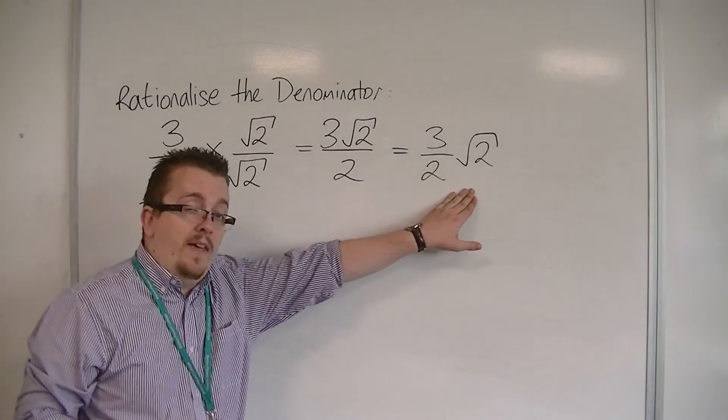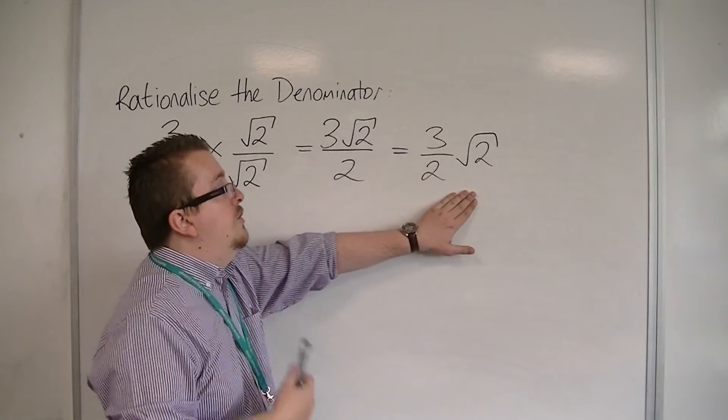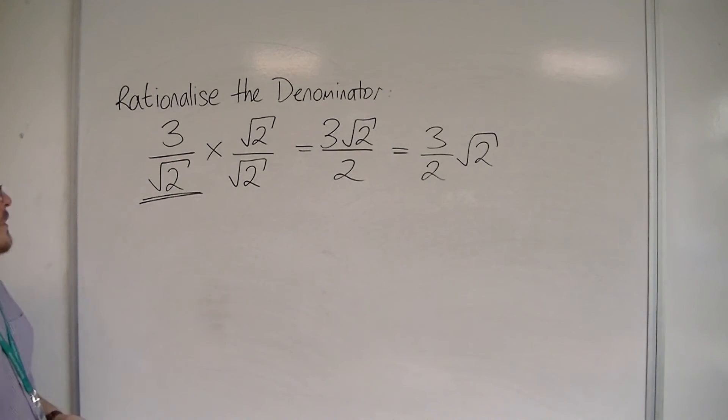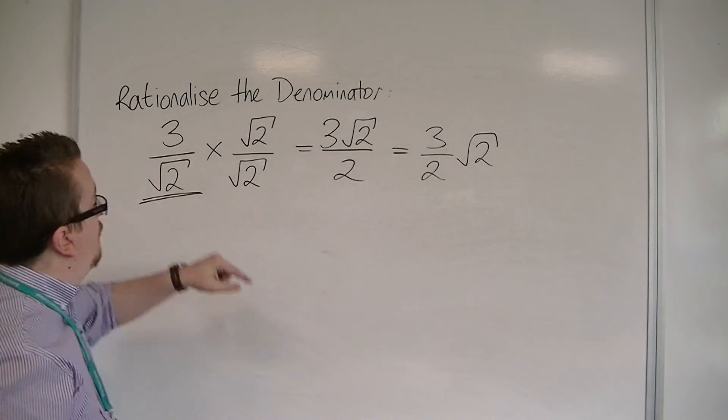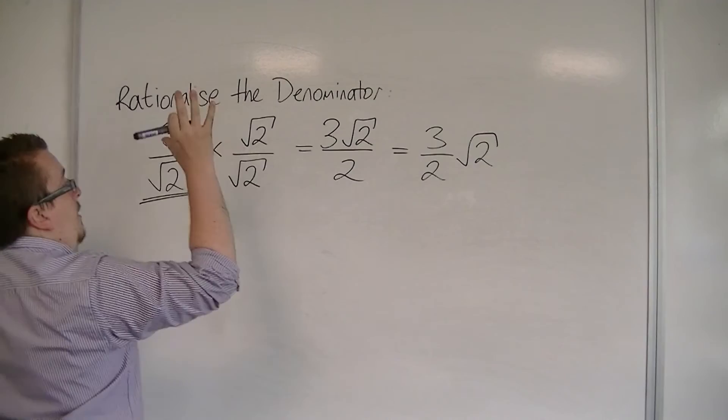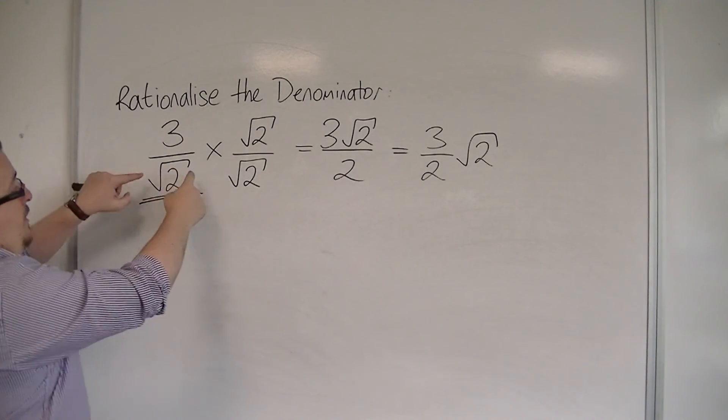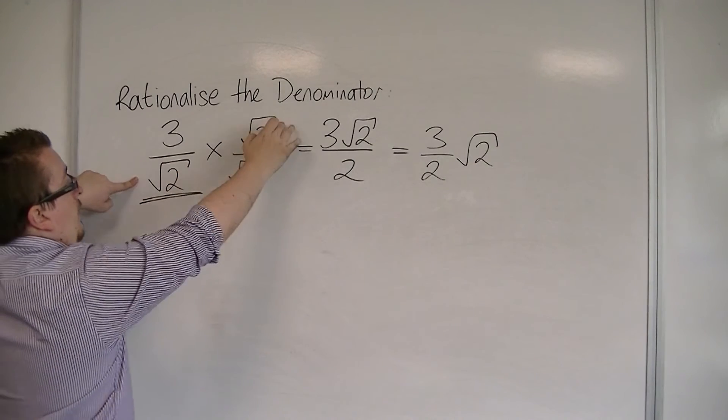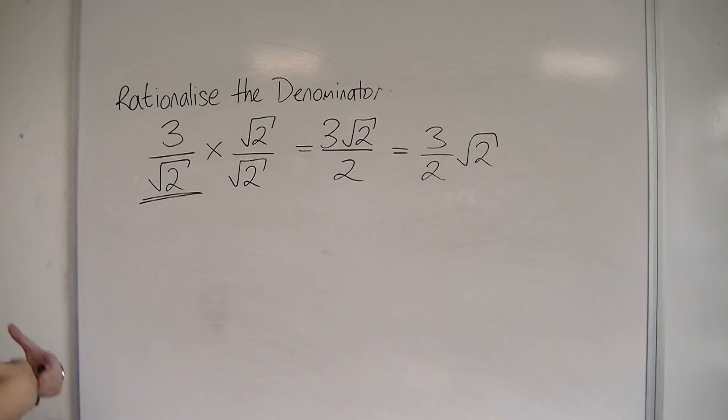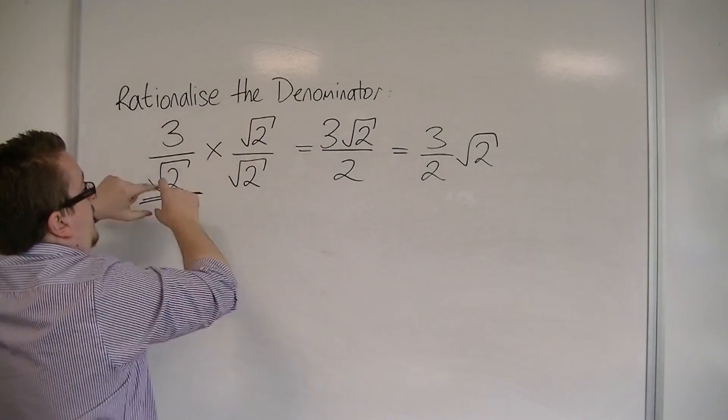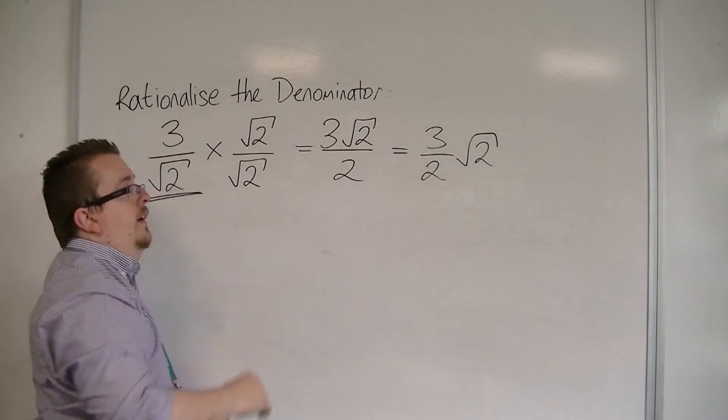Now, trying to work that out is much easier, because I'm going to be multiplying 1.5 by root 2. So this is how we rationalize the denominator. For simple fractions like this, I'm multiplying it by 1, where the 1 I've chosen to be the denominator, the surd, over itself. And that then allows me to multiply the fractions, multiply the numerators and the denominators, and then to simplify.